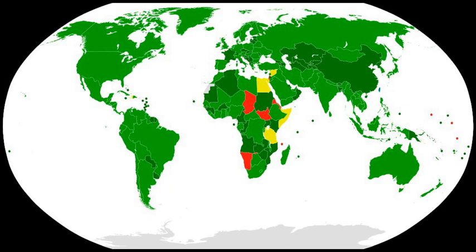The topics agreed upon were: i. Ways and Means to Enhance National Implementation, including Enforcement of National Legislation, Strengthening of National Institutions and Coordination Among National Law Enforcement Institutions; ii. Regional and Sub-Regional Cooperation on BWC Implementation; iii. National, Regional and International Measures to Improve Biosafety and Biosecurity, including Laboratory Safety and Security of Pathogens and Toxins; iv. Oversight, Education, Awareness Raising, and Adoption and/or Development of Codes of Conduct with the aim to prevent misuse in the context of advances in bioscience and biotechnology research with the potential of use for purposes prohibited by the convention.